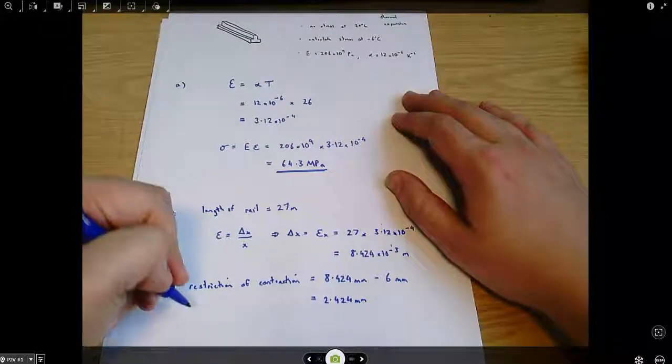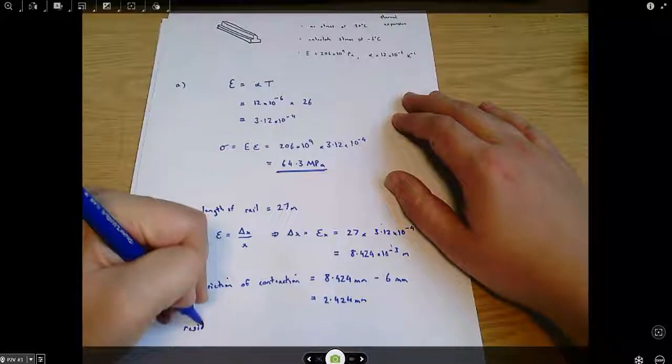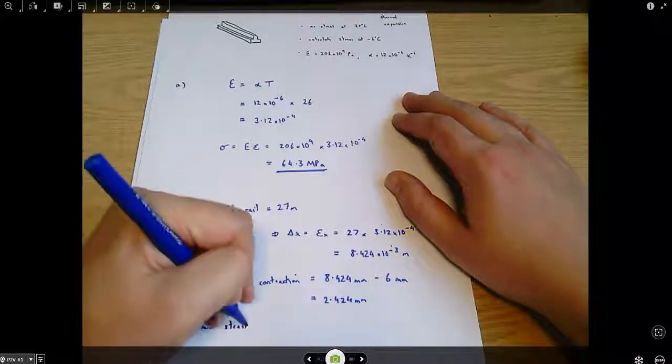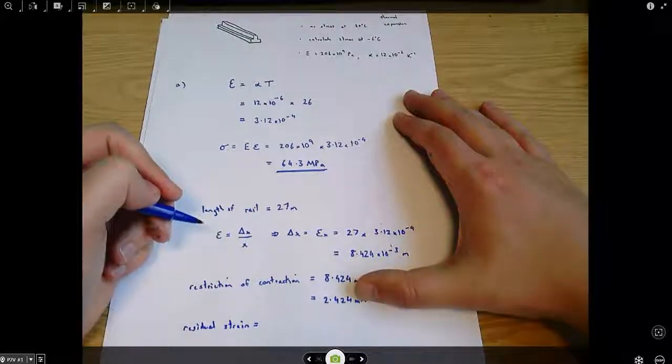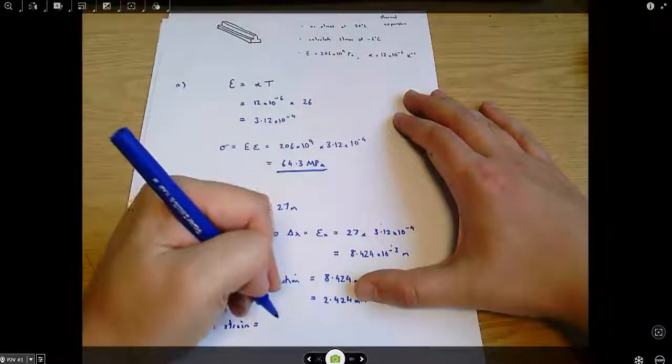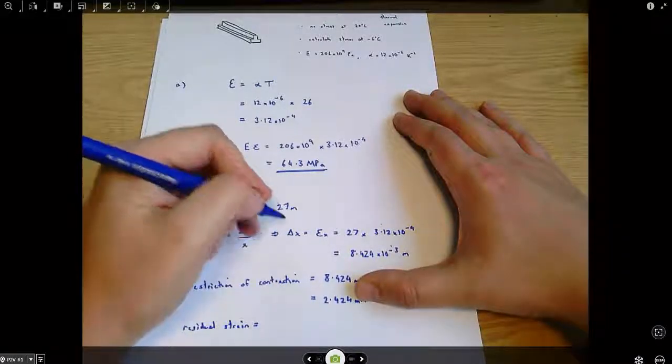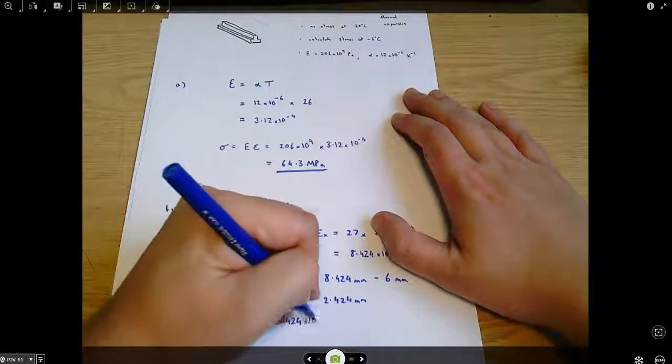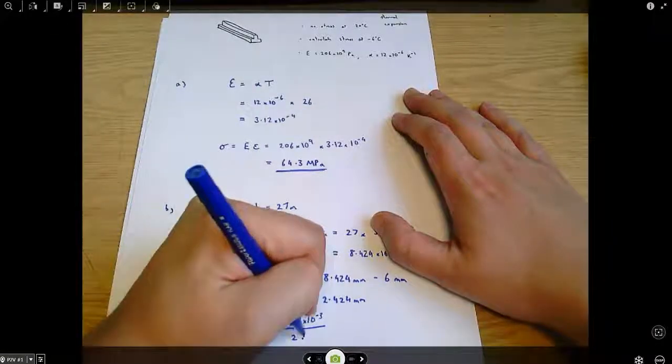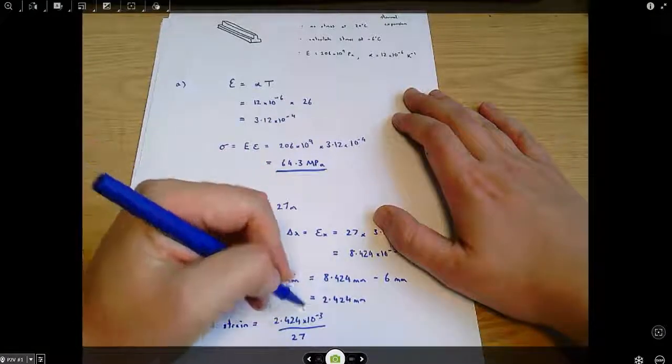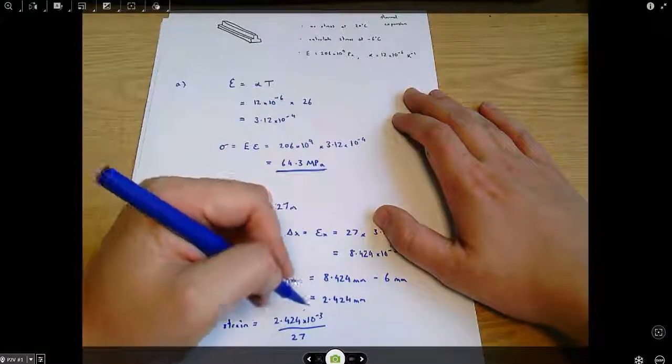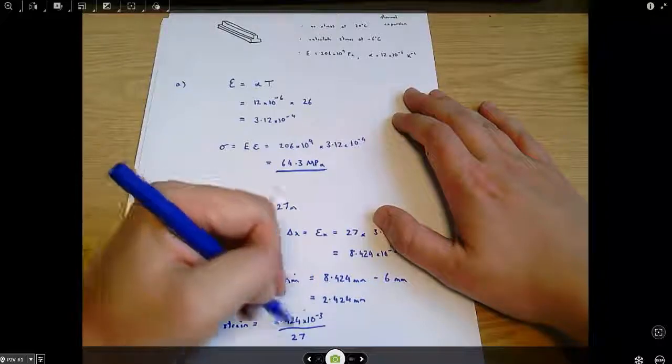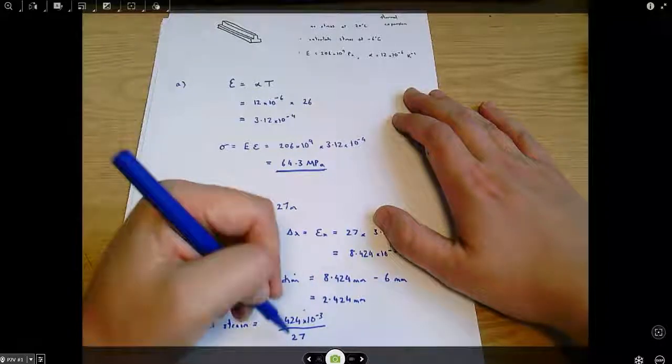And then we can say the residual strain, which is kind of due to this restriction. The 2.424 millimetres that it can't contract is our delta x. So, that's 2.424 times 10 to the minus 3 divided by the length. So, strain is a change in length, or an amount that something has been stretched, divided by the original length.